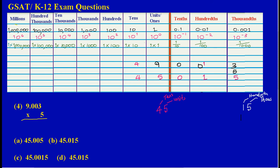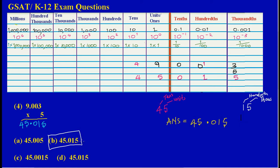So my answer — when I multiply 5 times 9.003 — is equal to 45.015. I've gotten a four, a five, my decimal point under the point, then zero, one, five. Looking at the options they gave us, B would be the correct answer: 45.015. Thank you. If you have any questions or comments, feel free to post them. Bye bye.